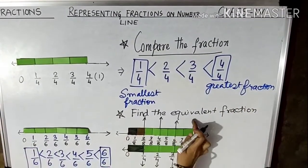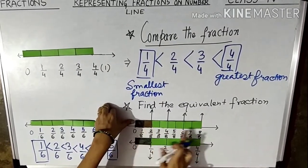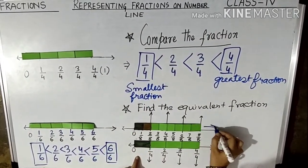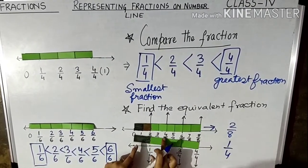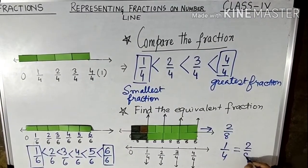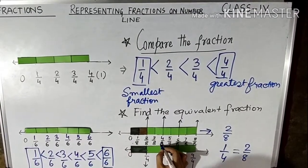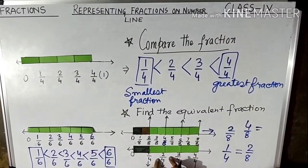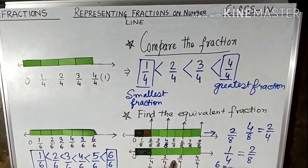Now, how can you find equivalent fractions? There are two strips — one divided into 8 equal parts and one divided into 4 equal parts. The fraction of the first strip is 2/8 and the fraction of the second strip is 1/4, but both are colored equally, so these are equivalent — meaning 1/4 is equivalent to 2/8. Similarly, 4/8 is equivalent to 2/4, and 6/8 is equivalent to 3/4.